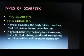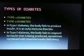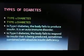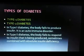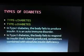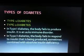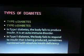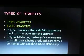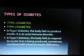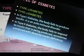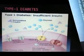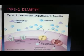There are two main types of diabetes. In type 1 diabetes, the body fails to produce insulin — it is an autoimmune disorder. In type 2 diabetes, the body fails to respond to the insulin that is being produced, sometimes combined with absolute insulin deficiency.